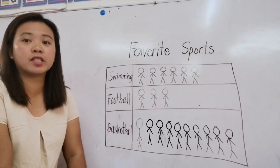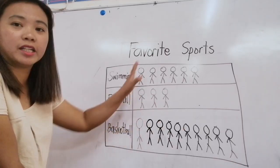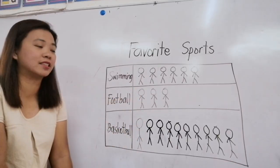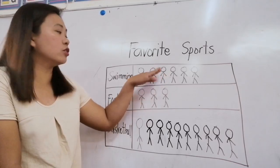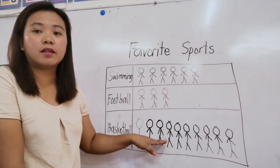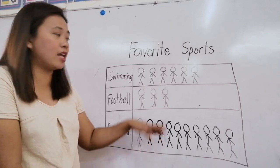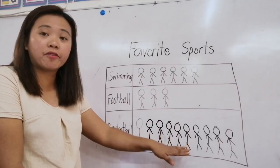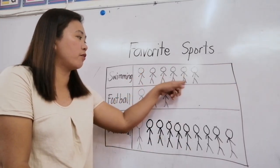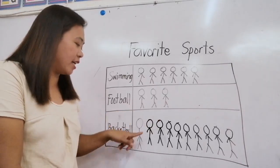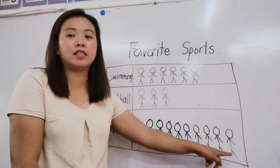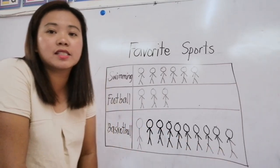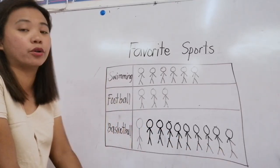Now the next question: how many children joined in this data, in collecting this data? What you're going to do is count all the students. We have here one. Count everything. One, two, three, four, five, six, seven, eight, nine, ten, eleven, twelve, thirteen, fourteen, fifteen, sixteen, seventeen, eighteen, and then nineteen. So the answer is nineteen students joined.